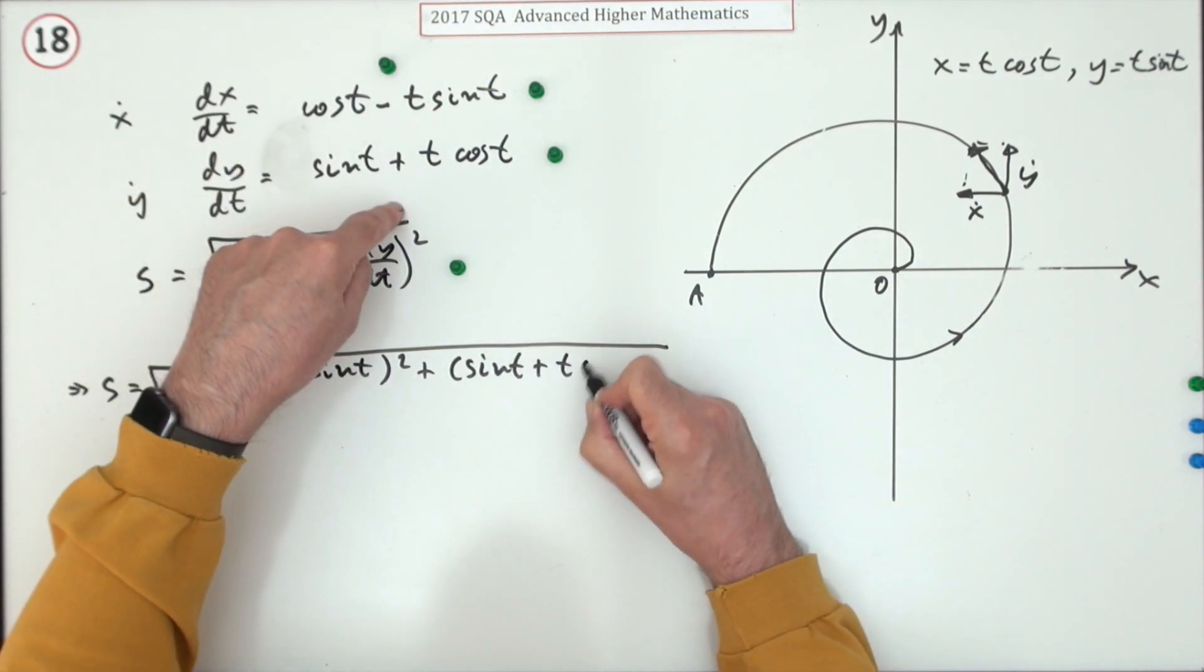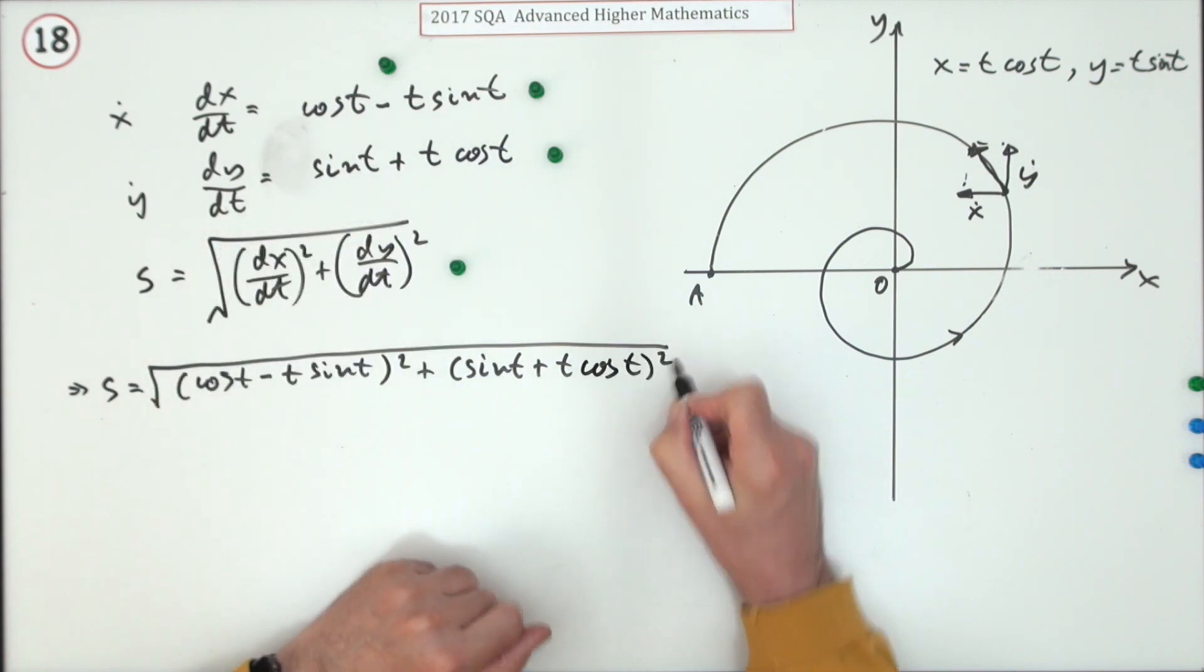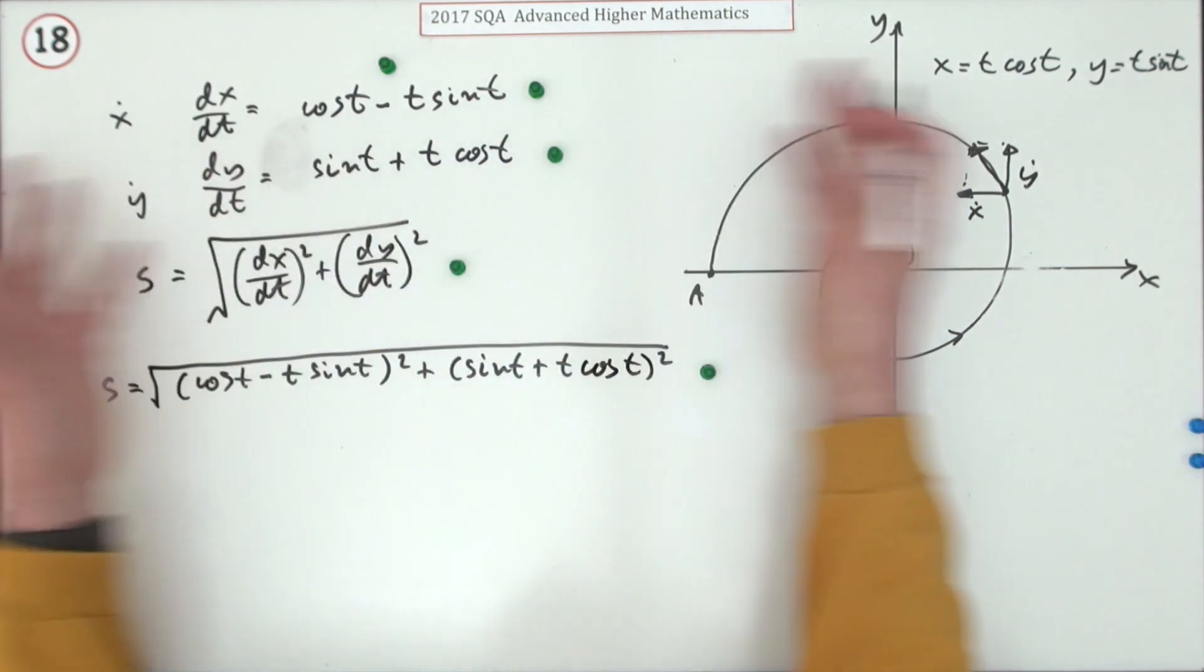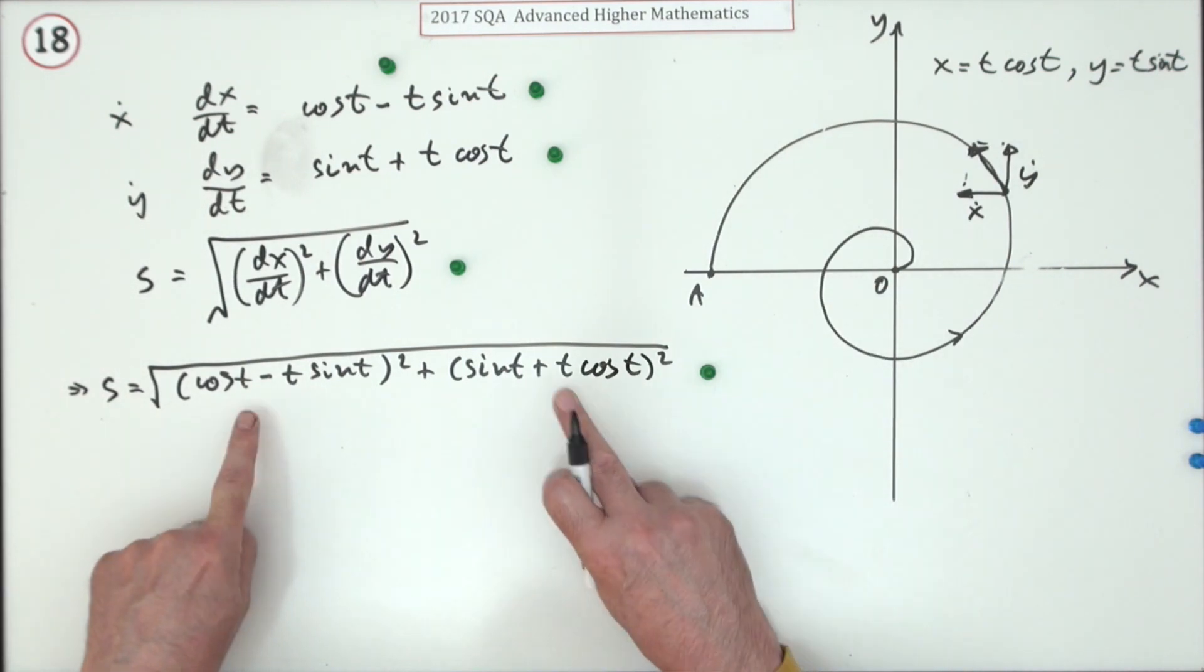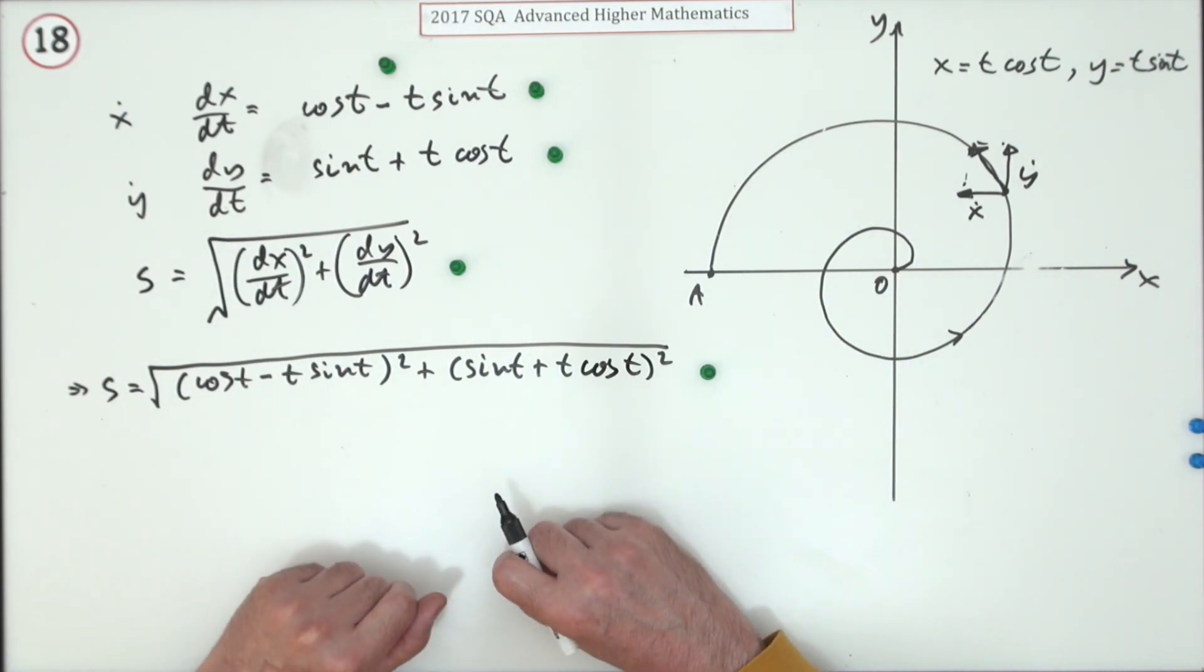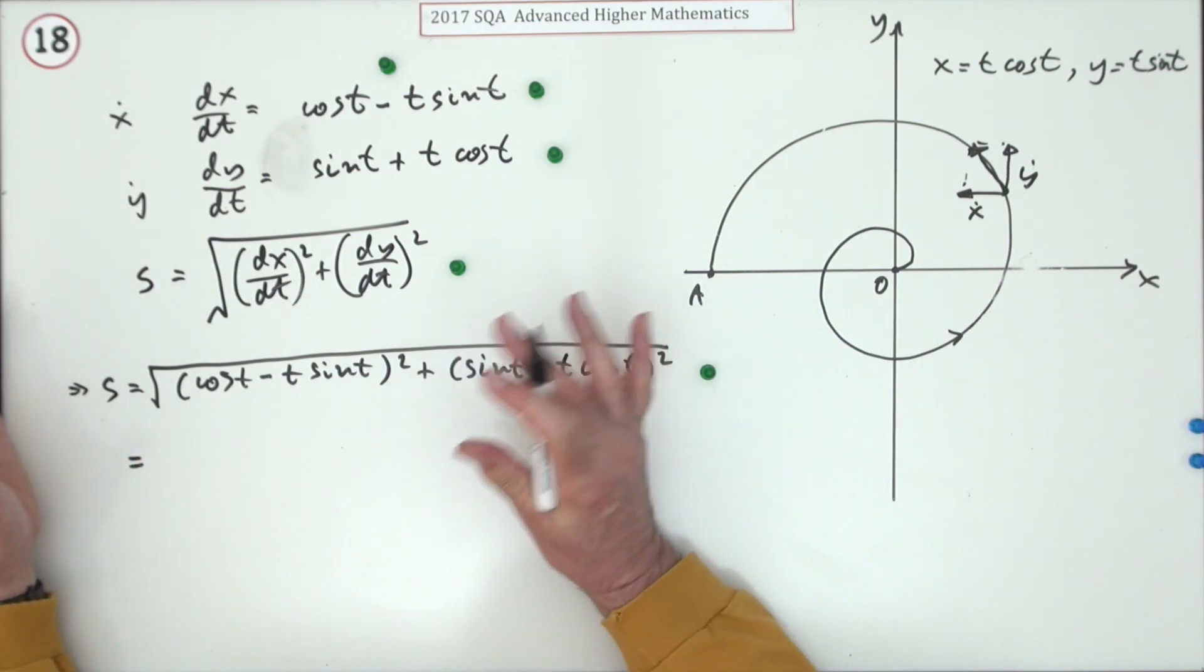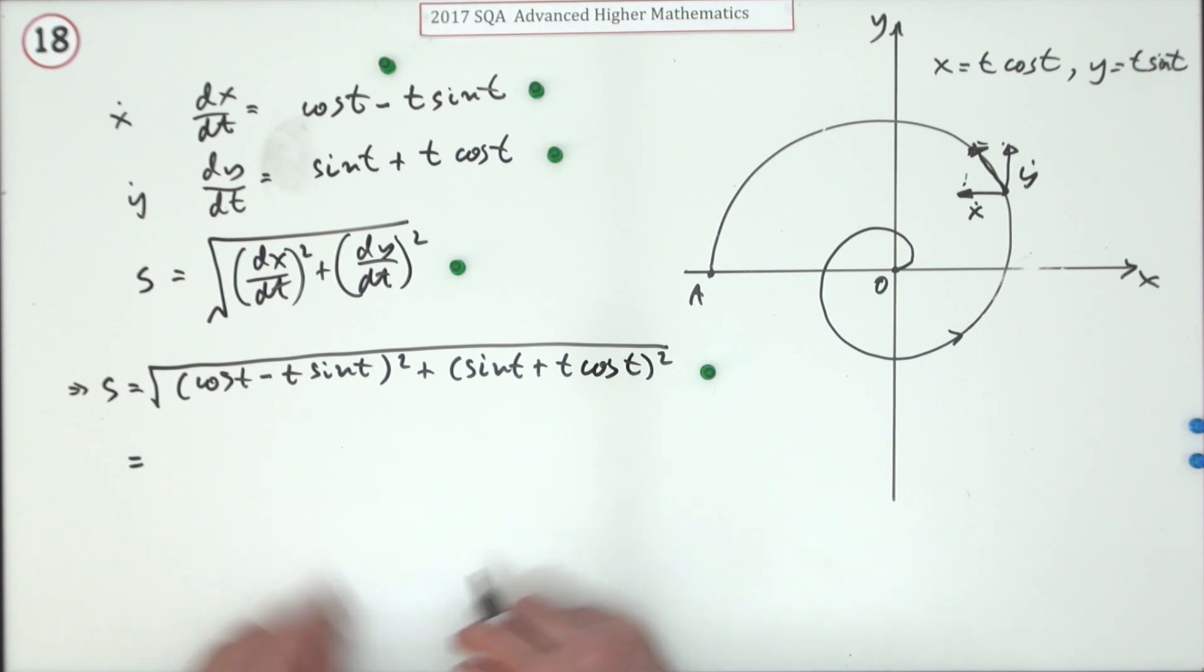Now they're actually giving you the last mark for this. And in the marking scheme, it says simplifying this is not actually required. Well, that's just nonsense, of course, isn't it? It must have been a badly performed question and they're just looking for ways to give out marks.